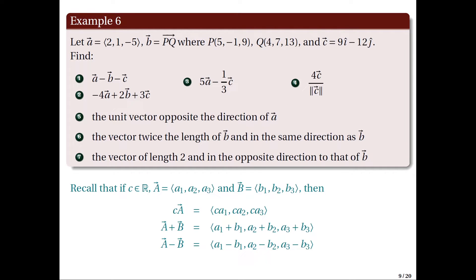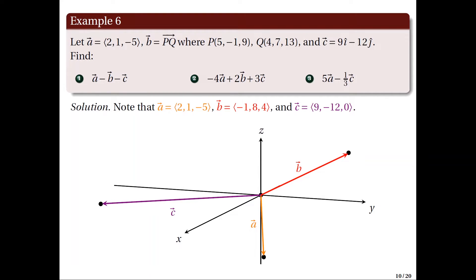For our last example, we find resulting vectors from combinations of vector operations on vectors A, B, and C. Let's first recall the formulas for scalar multiplication, vector addition, and vector subtraction. Writing each in component form: vector A = (2, 1, −5); vector B is from point P to Q, with components (4−5, 7−(−1), 13−9) = (−1, 8, 4); and vector C = (9, −12, 0).